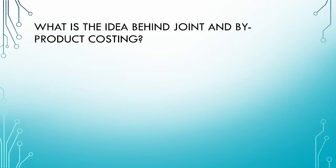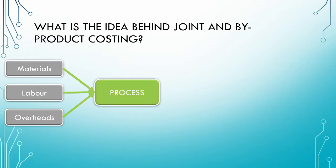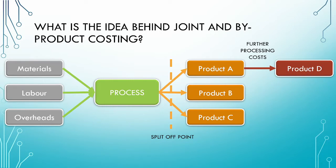Let us revise the idea behind joint and byproducts. As with any other manufacturing process, we take our raw materials, labor and overheads and subject them to a manufacturing process to get a product at the end. However, unlike a single product process, we could get two, three, or even more products simultaneously from the process. For joint processes, we cannot distinguish between the different products until a specific point known as a split-of-point. Before this split-of-point, we cannot trace the costs to the individual products. After the split-of-point, where the products are separately identifiable, they may be subject to further processing. These further processing costs can be traced to the individual products to which they relate.